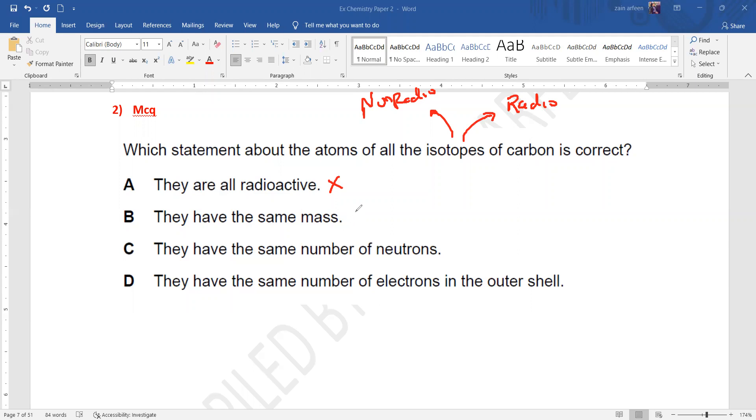They all have the same mass - isotopes have different masses. They have the same number of neutrons - isotopes do not have the same number of neutrons.